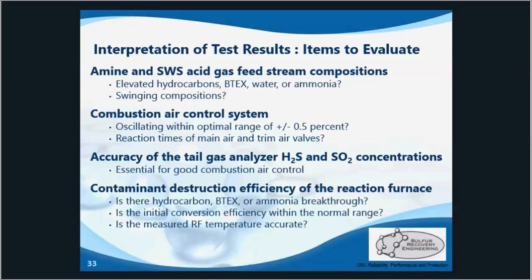We will also evaluate the combustion air control system. Is it oscillating within that plus or minus 0.5% range? Are the main air and trim air valves acting too slowly or too quickly? We'll evaluate the accuracy of the tail gas analyzer and its H2S and SO2 concentrations, because good combustion air control is impossible without adequate operation of the tail gas analyzer.